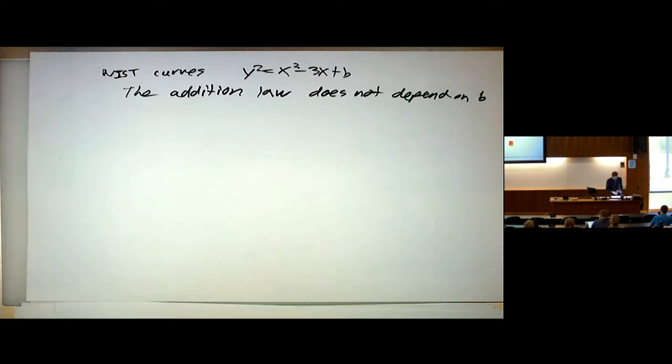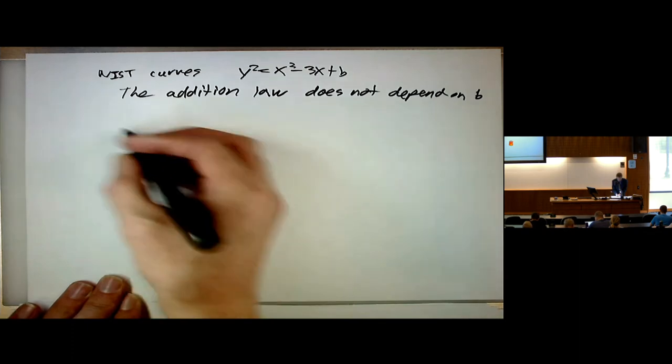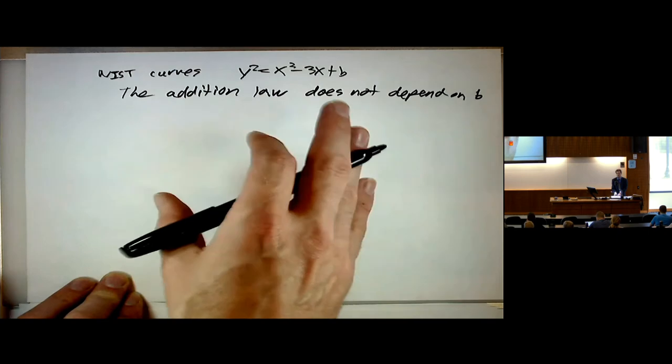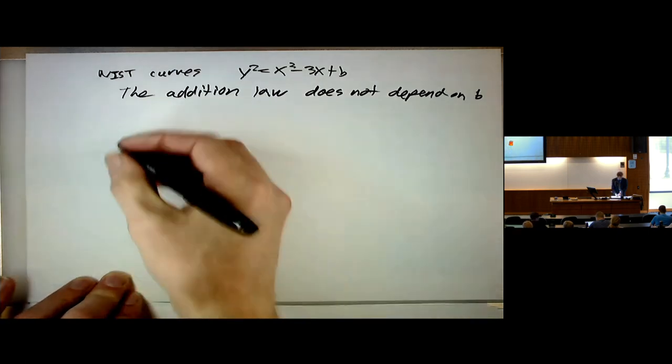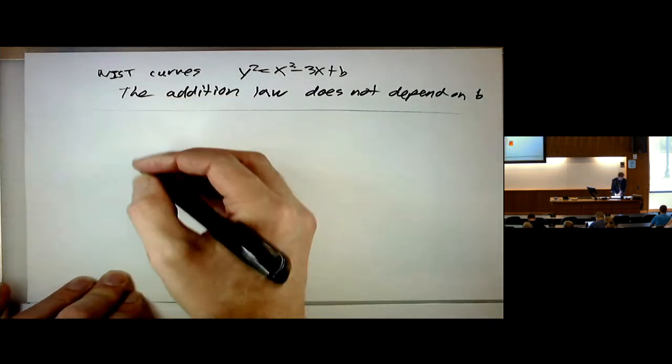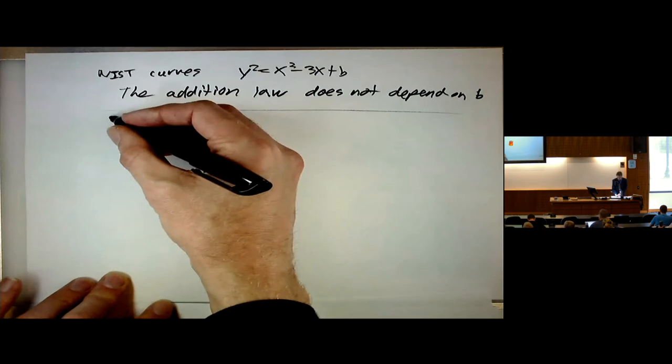What Bernstein pointed out is that you can actually skip sending the y-coordinate completely. You can just send the x-coordinate - at least if you're using the Montgomery curves, you can just send the x-coordinate. And the reason for that, I don't know if you saw this in the notes, but if you read the section about the curve geometry completely anyway.